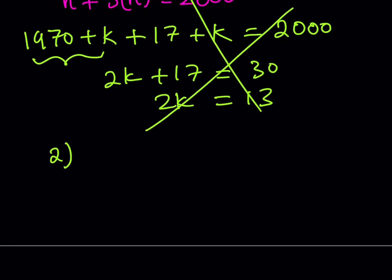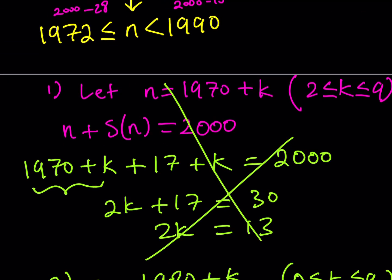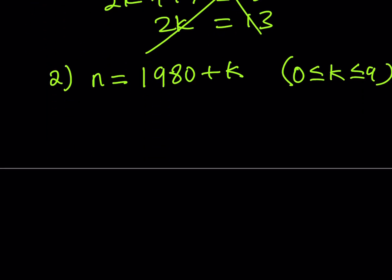Let's go ahead and look at the second case. The second case goes like this, n can be written as 1980 plus k, and k is going to be between 0 and 9 inclusive in this case, because I can have anything 1980 through 1989. And notice that our values are going to range between these two. So it can't be 1990, but it can be 1989. That's the highest that I can get.